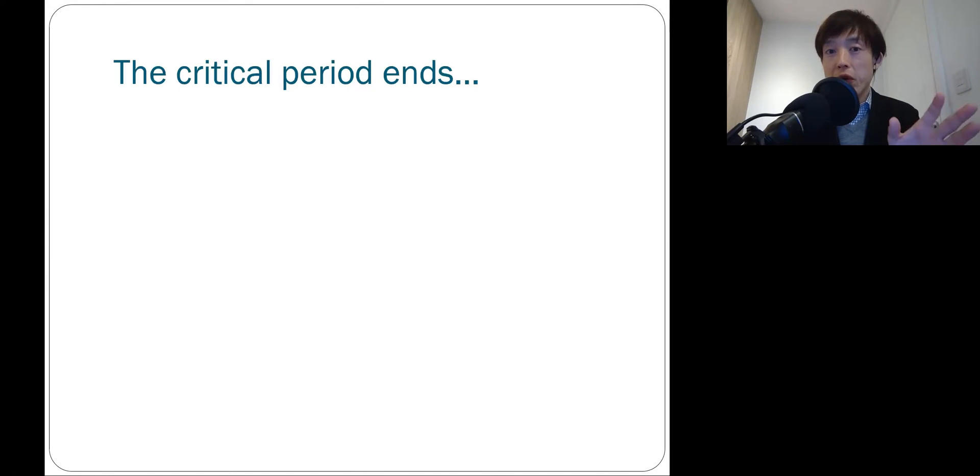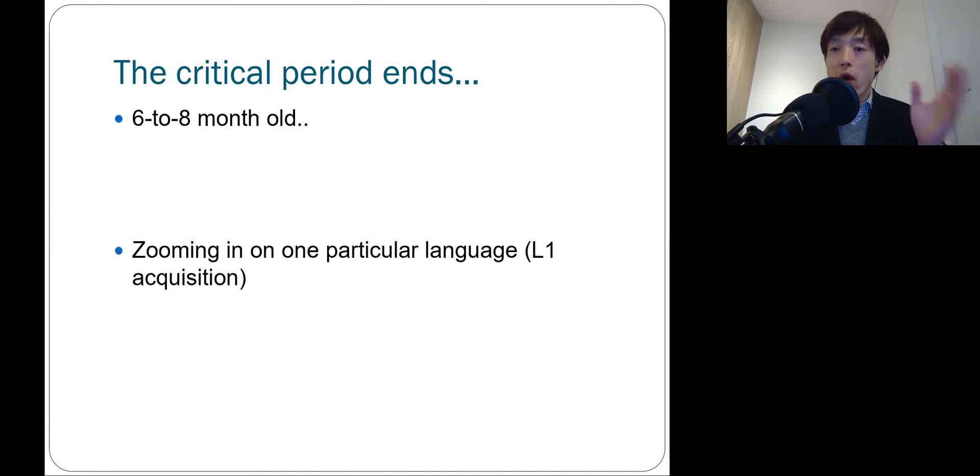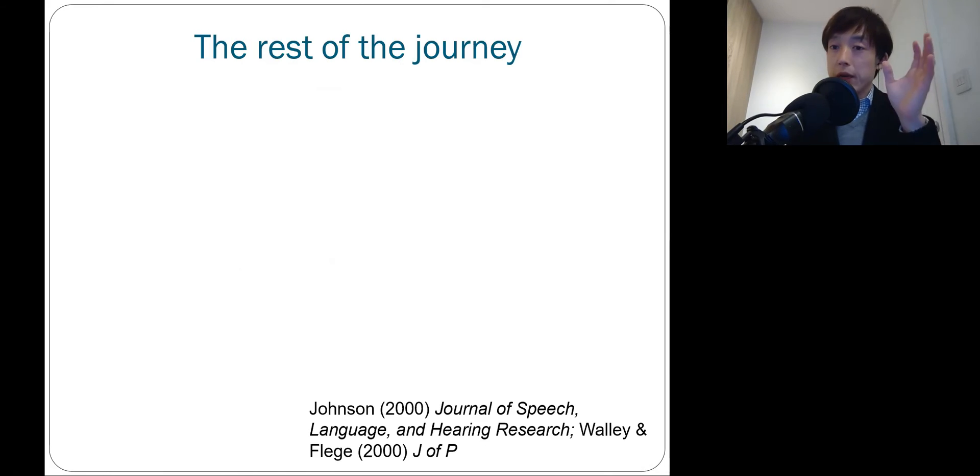As I just said, the critical period ends somewhere around six months for vowels and eight months for the consonants. And afterwards, you will zoom in on one particular language. So that's the beginning of first language acquisition. So how long does this continue? And when does the first language acquisition end?